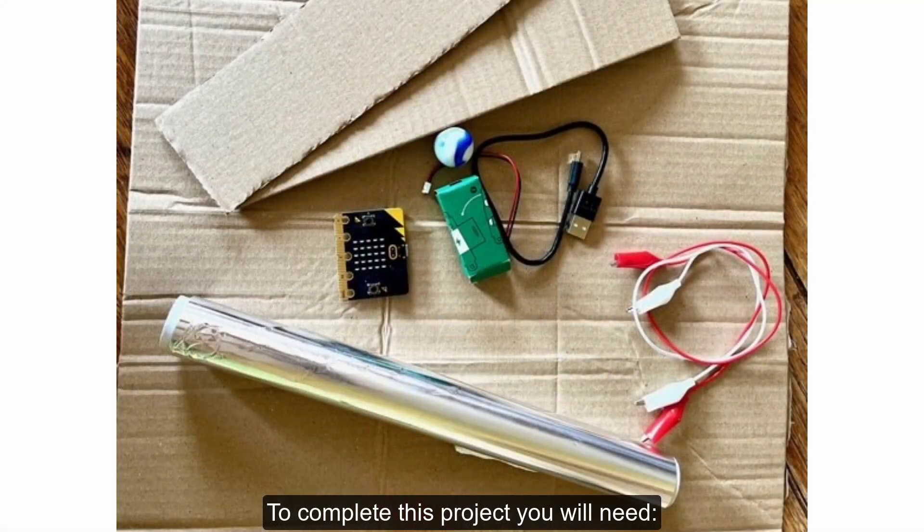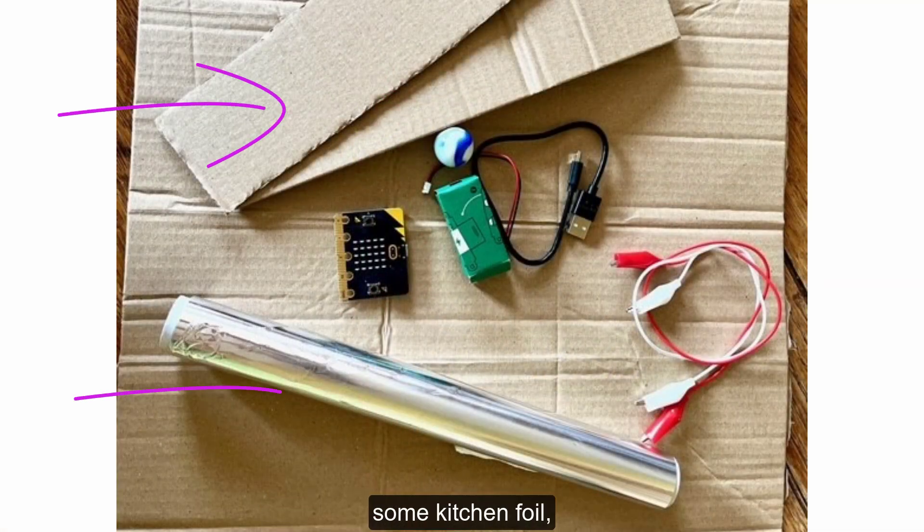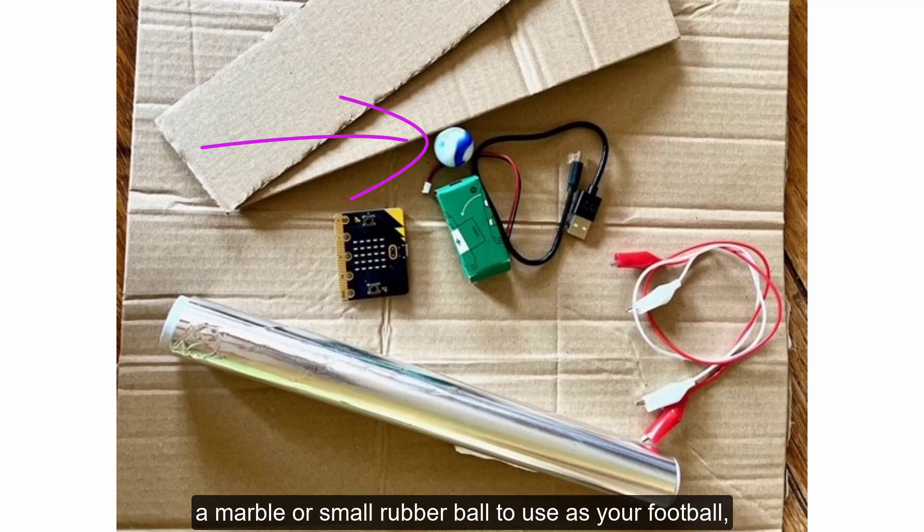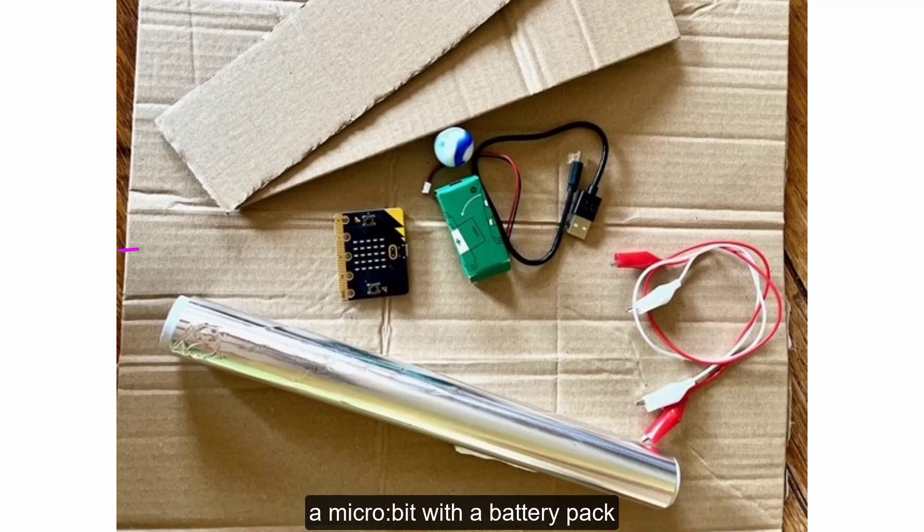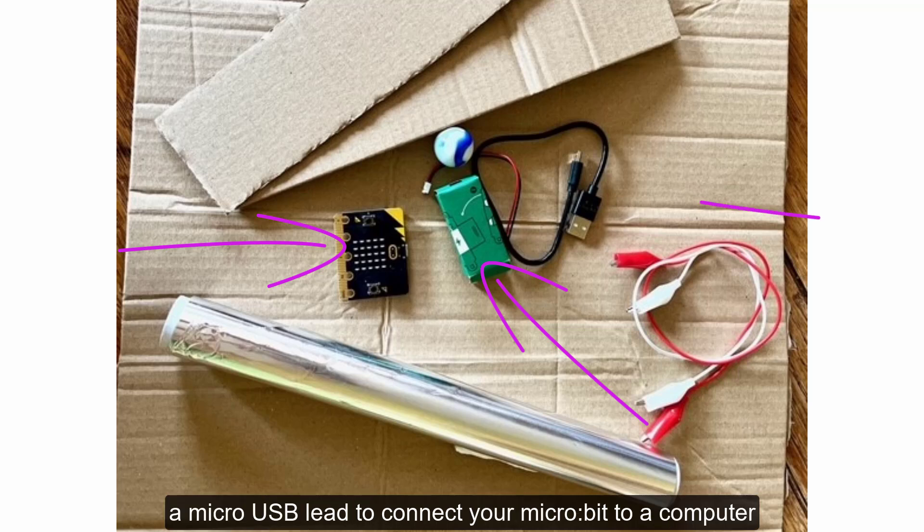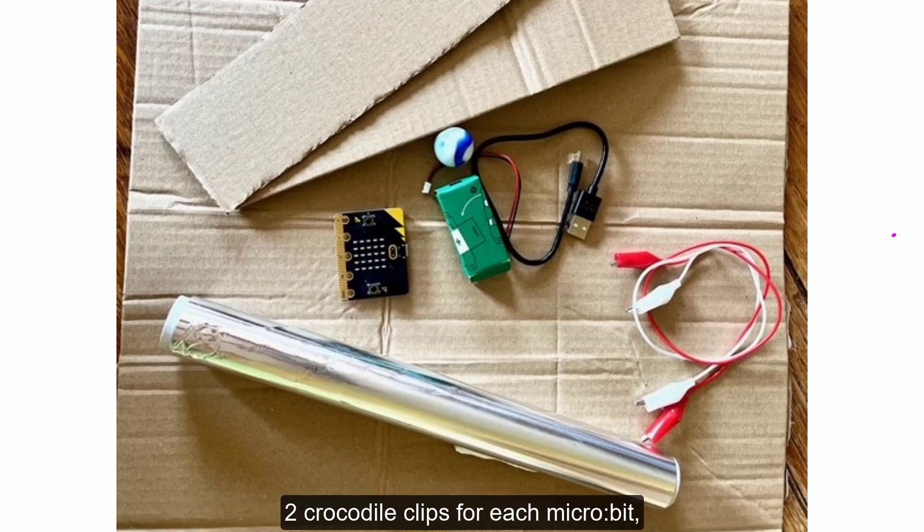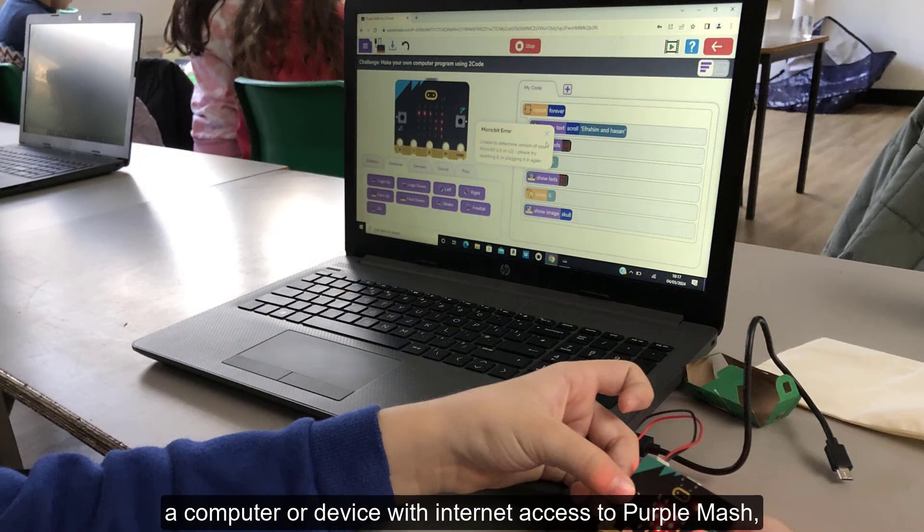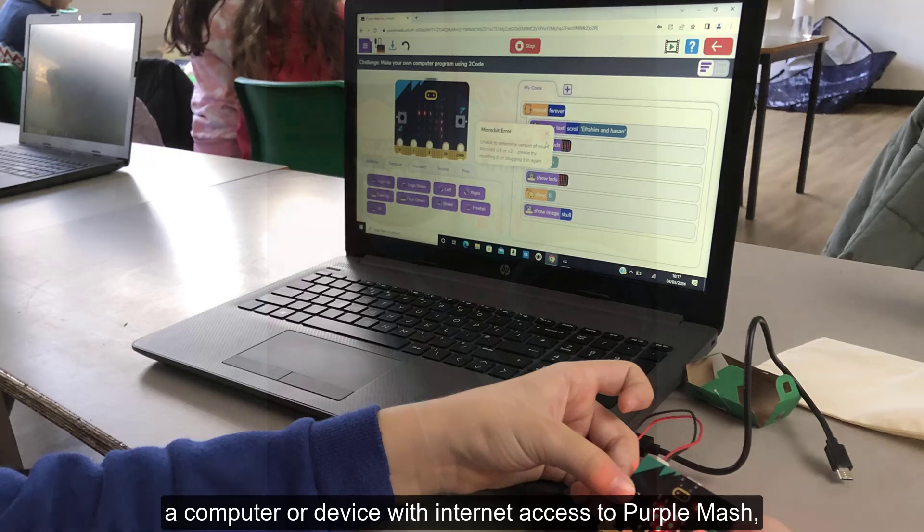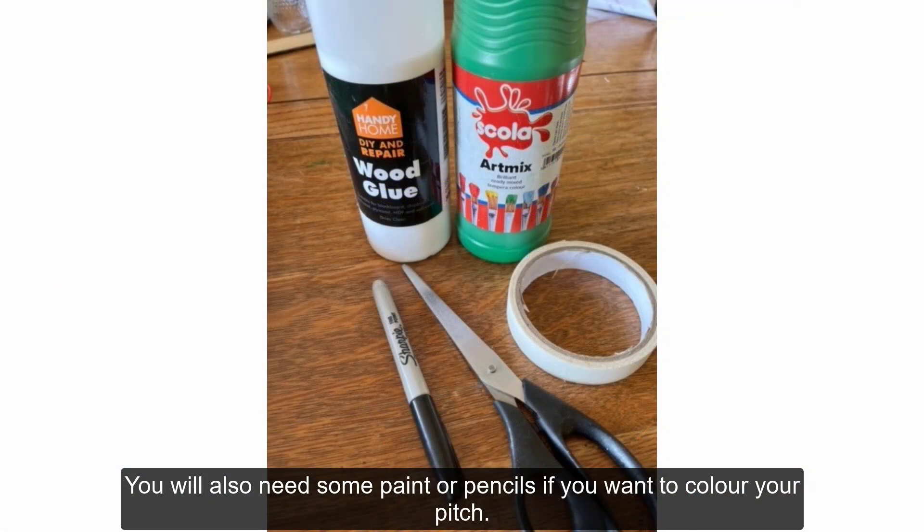To complete this project, you will need some cardboard, some kitchen foil, a marble or small rubber ball to use as your football, a microbit with a battery pack, a micro USB lead to connect your microbit to a computer, two crocodile clips for each microbit, a computer or device with internet access to Purple Mash. You will also need some paint or pencils if you want to colour your pitch.